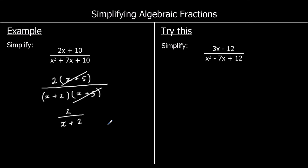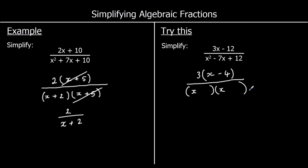So the top factorises into a single bracket — we've got 3x and negative 12, so we can take 3 outside: 3(x minus 4). For the bottom, we use double brackets. It's a quadratic in the form ax squared plus bx plus c. We're looking for what multiplies to make 12 and adds to make negative 7. That's negative 3 and negative 4. Both the top and bottom have x minus 4 as a factor, so we divide by x minus 4 to leave 3 over x minus 3.